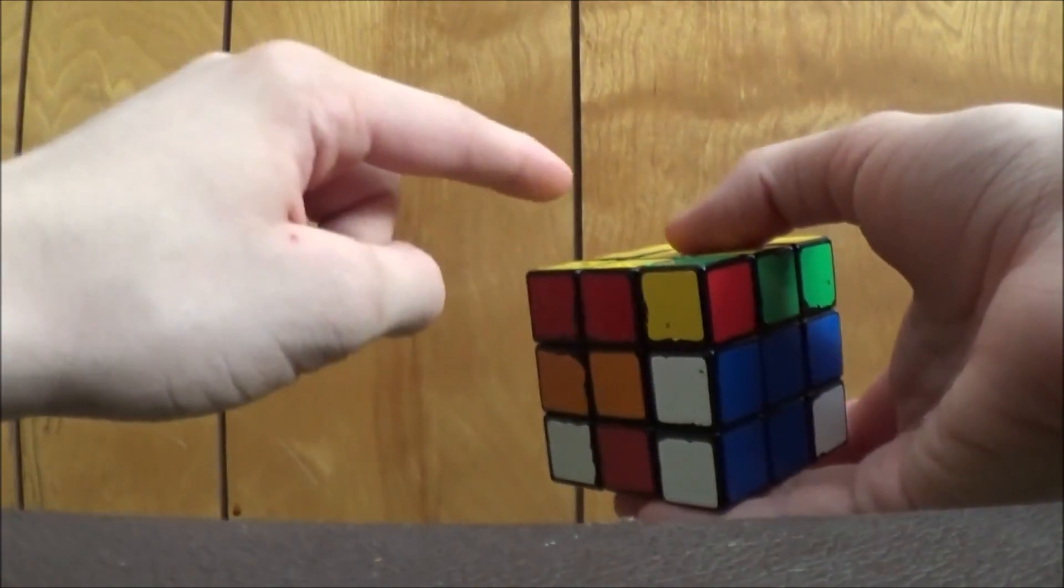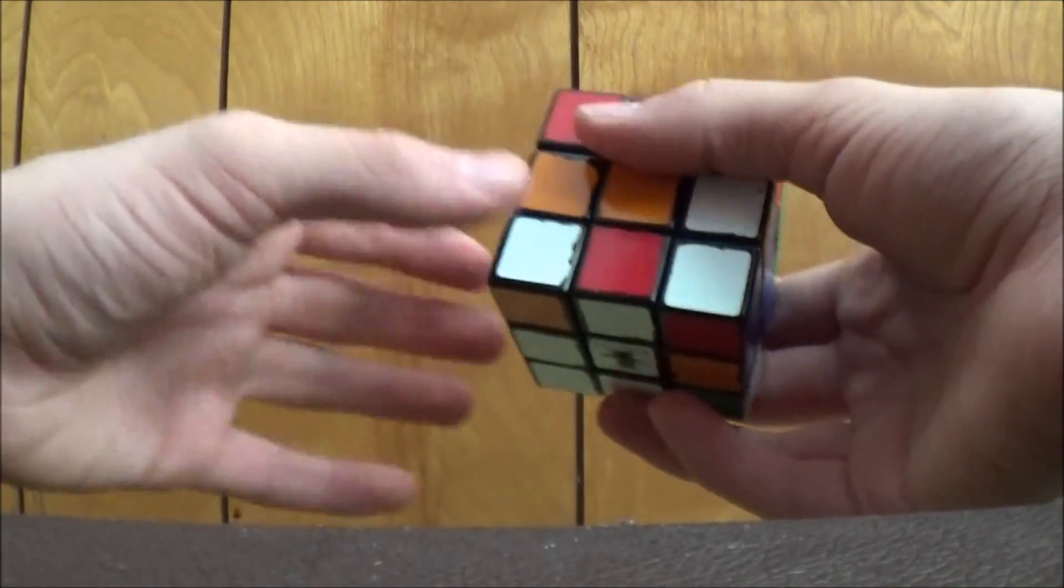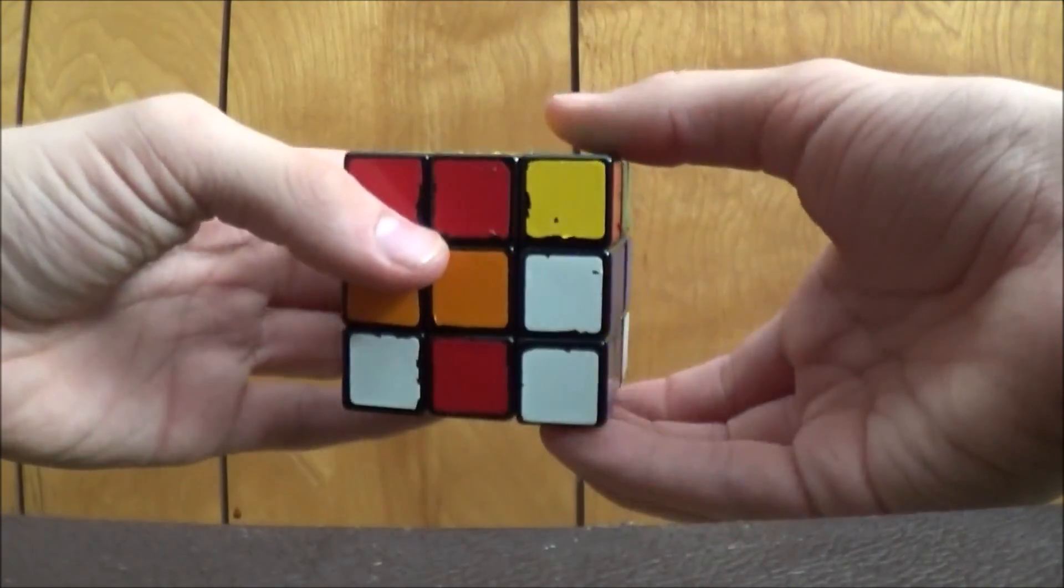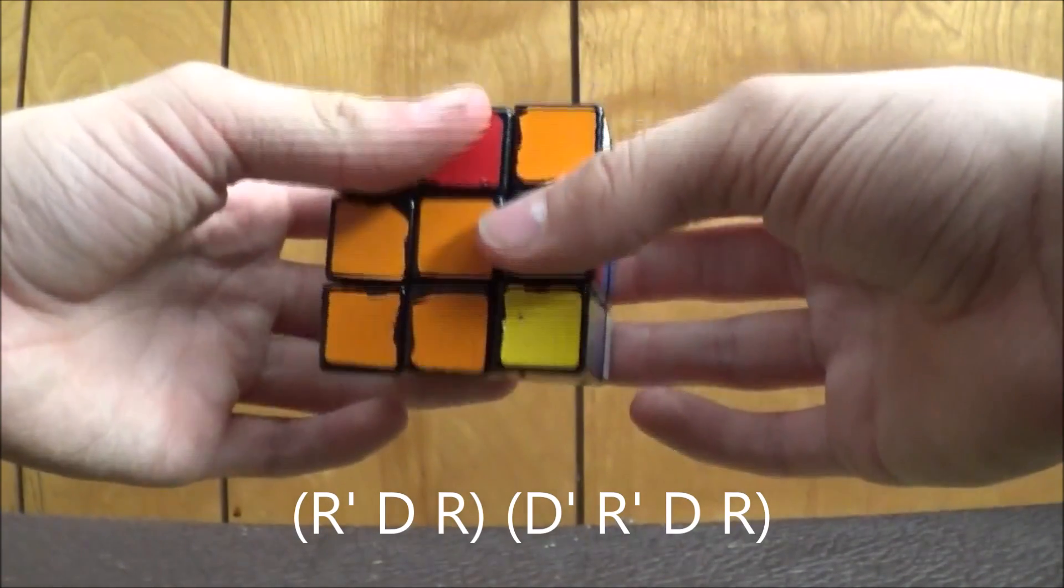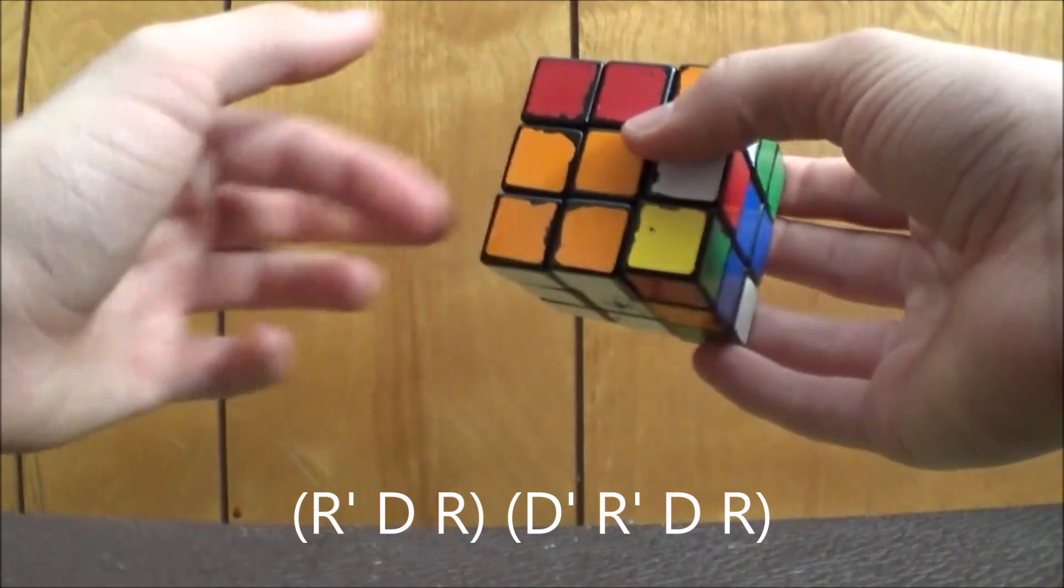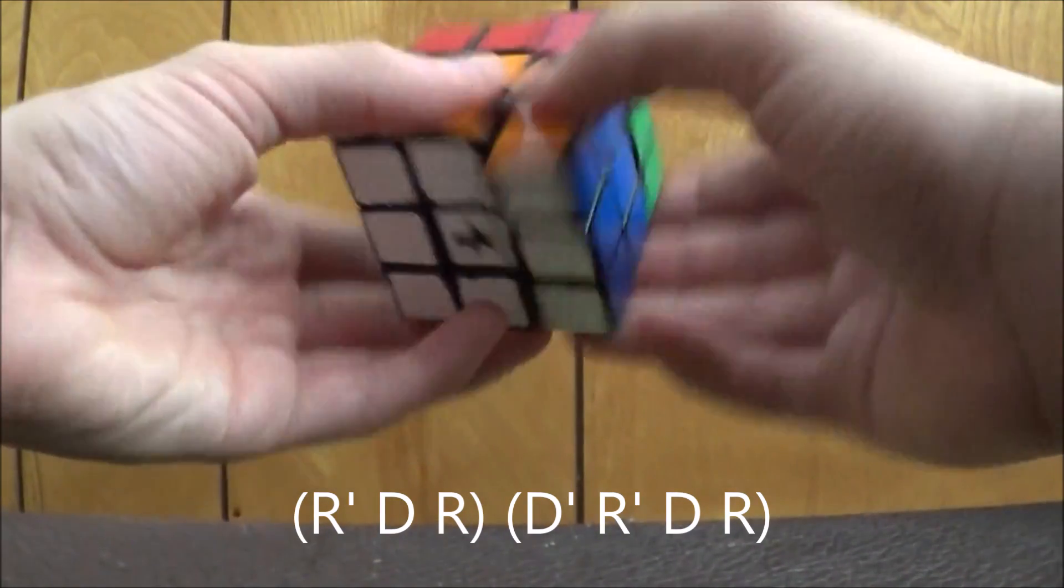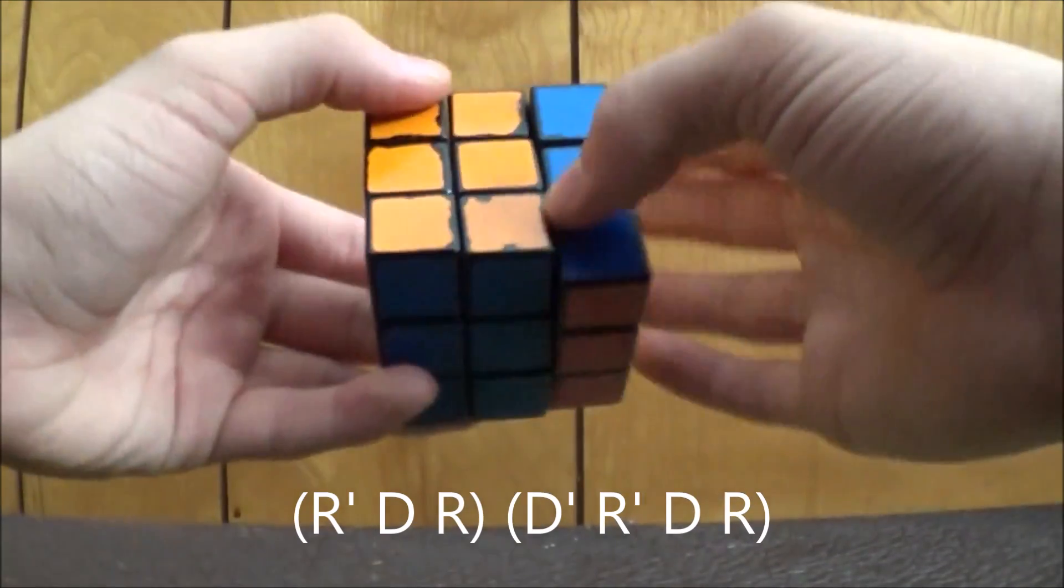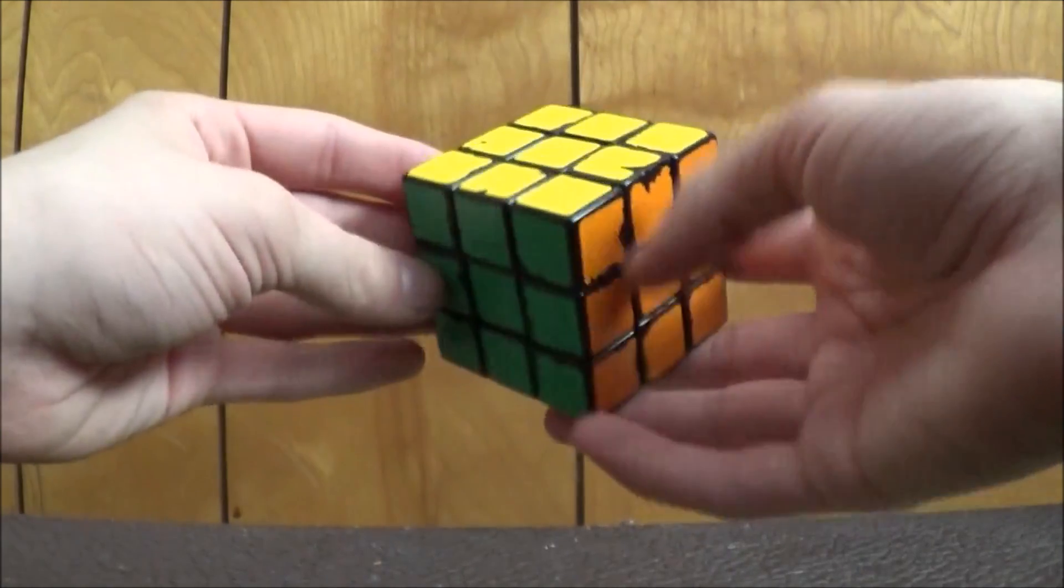Except you don't have to do the D prime move at the beginning. So it works like this: R prime, D, R. That's there. Now just do it backwards again. D prime, R prime, D, R. And you can now rotate the final two layers just like that, and the cube is now solved.